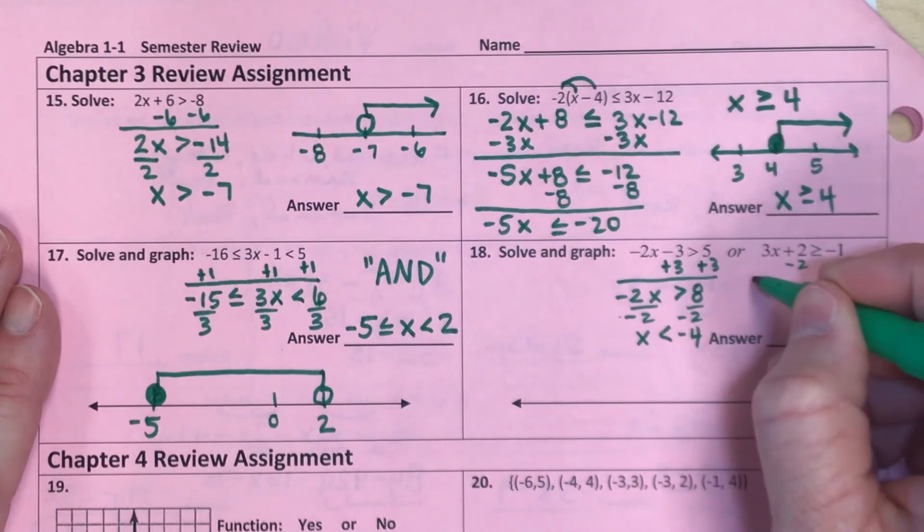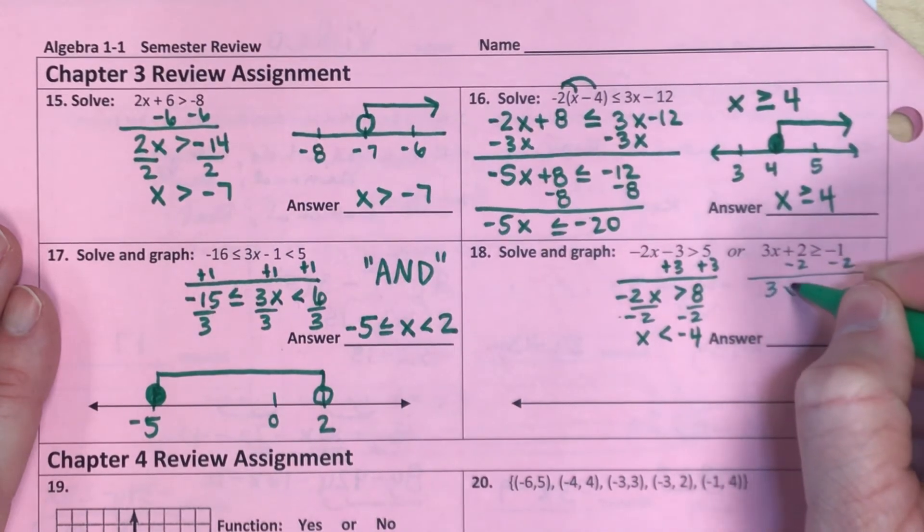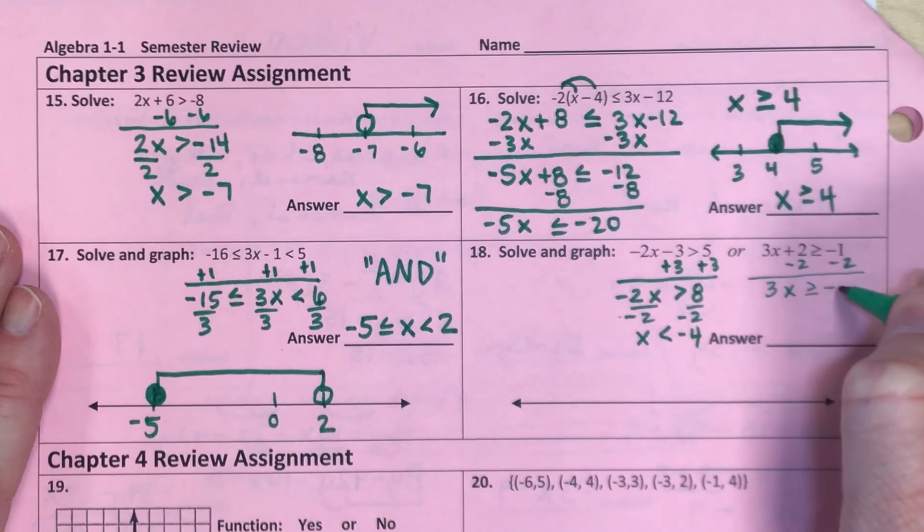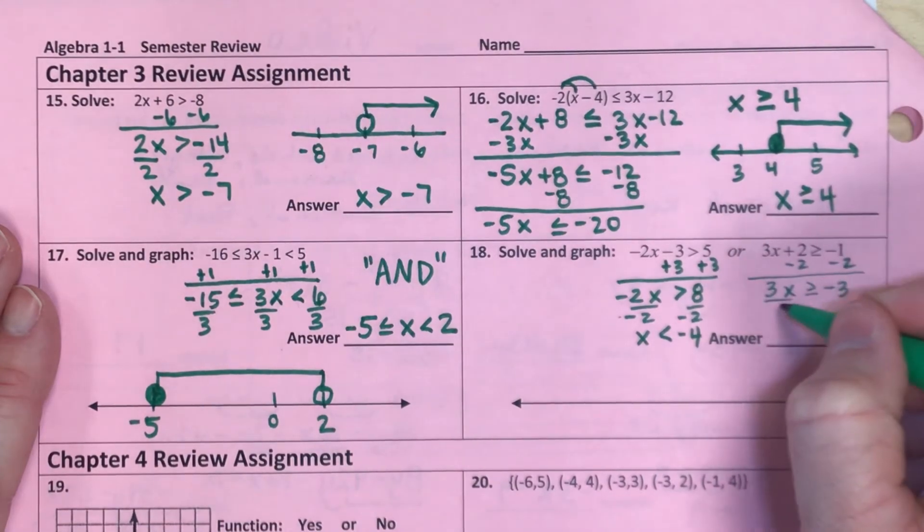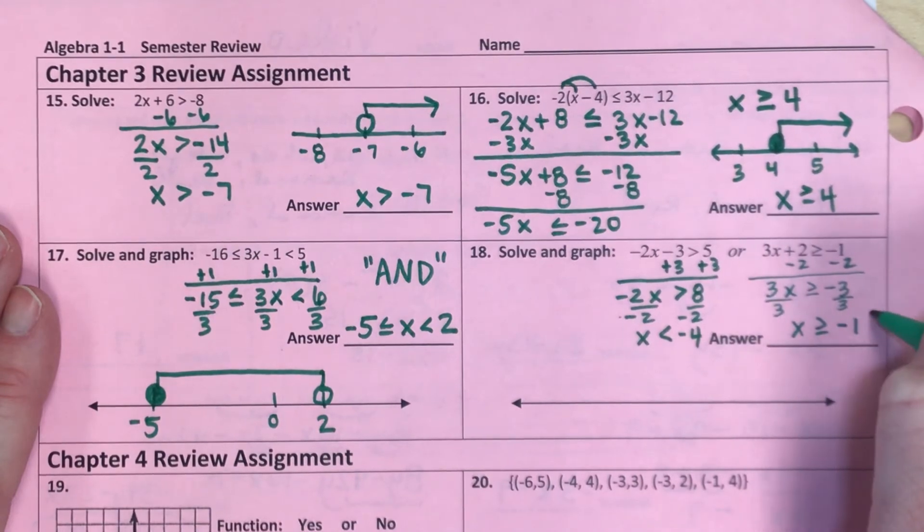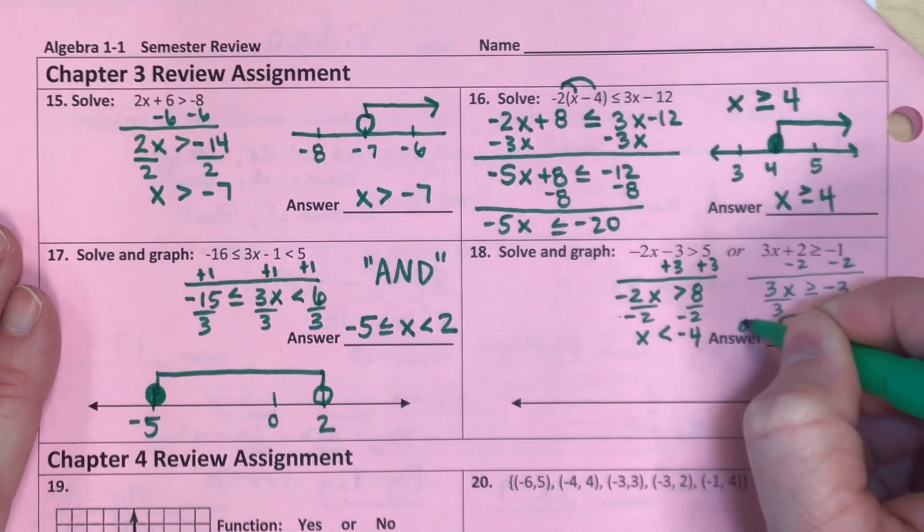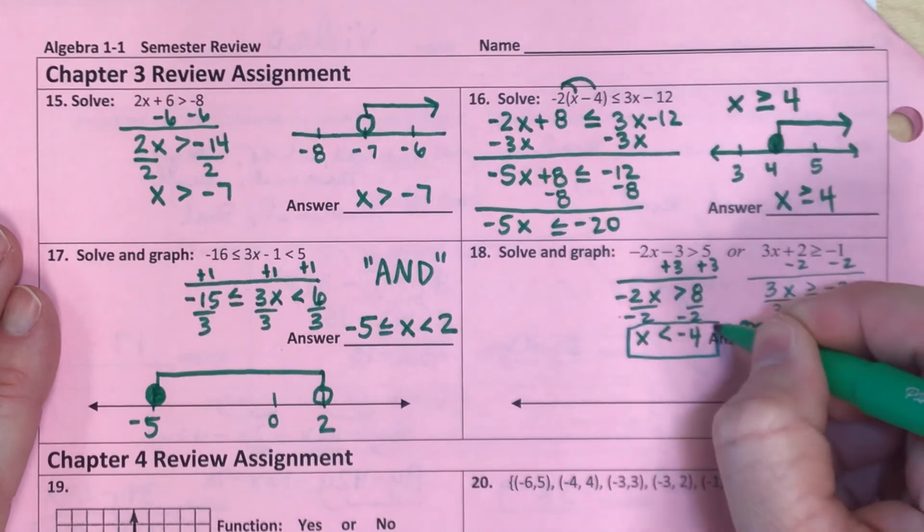For this side, if I subtract 2 over, I'm going to have 3x is greater than or equal to negative 3. And if I divide both sides by 3, I have x is greater than or equal to negative 1. So these are my two inequalities. I'll just box them to make it easier.